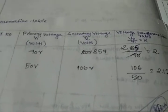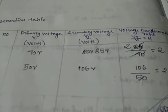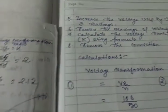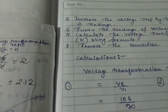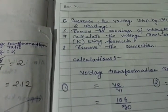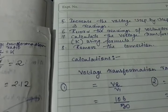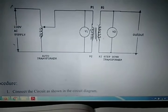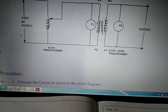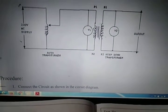This is all about the result of this experiment. At the final conclusion, we can conclude that for this experiment our voltage transformation ratio is 2.